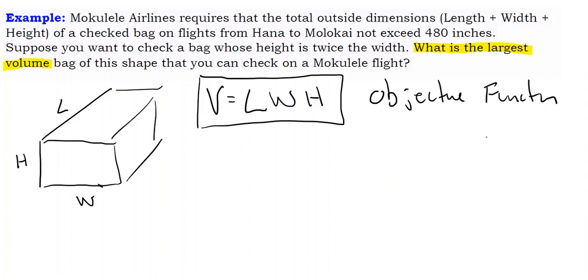The problem with this, of course, is we have more than one independent variable. In fact, in this problem, we have three. Length, width, and height are all different variables. So when we have two independent variables, we have to come up with a constraint. When we have three independent variables, we have to come up with two constraints. We need two constraints because we need to replace two of these variables.